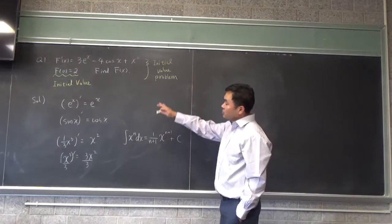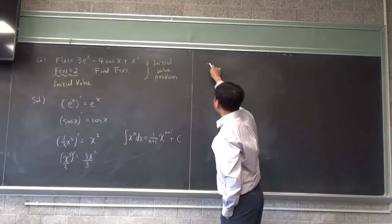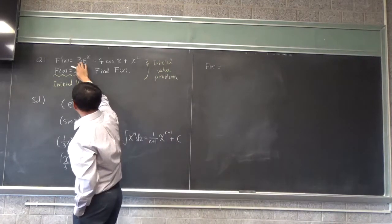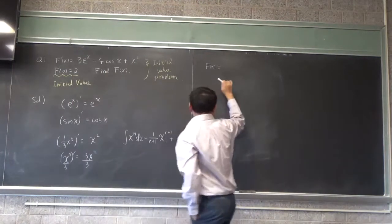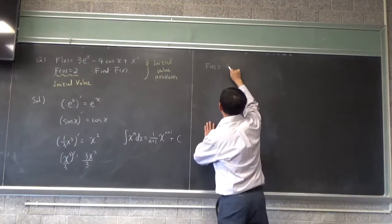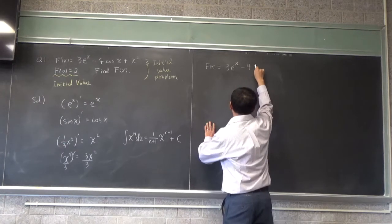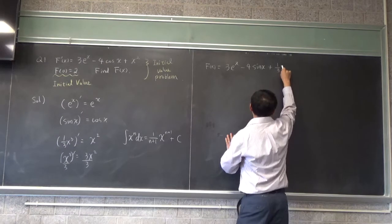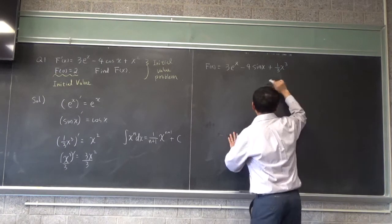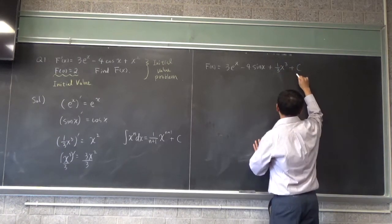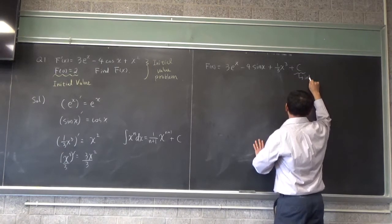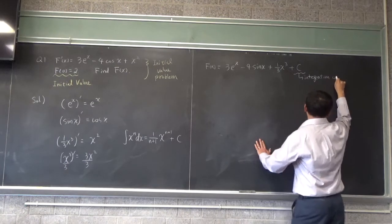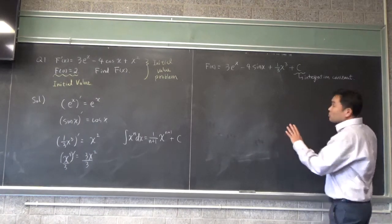So after seeing these, you can say that the function f of x must be made of these functions with these coefficients — 3, negative 4, and 1. So you must have 3 times e to the x, minus 4 sine of x, and then plus one-third x cubed. And then there should be a c — this is the integration constant.